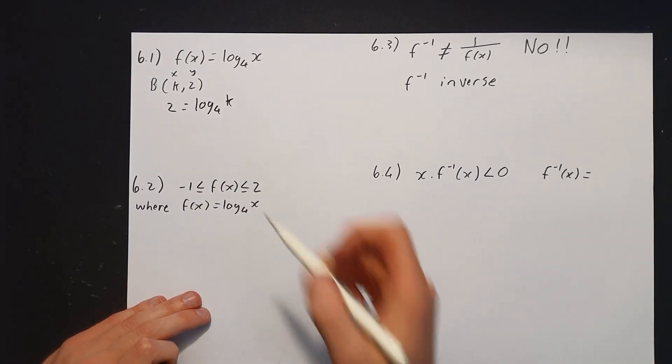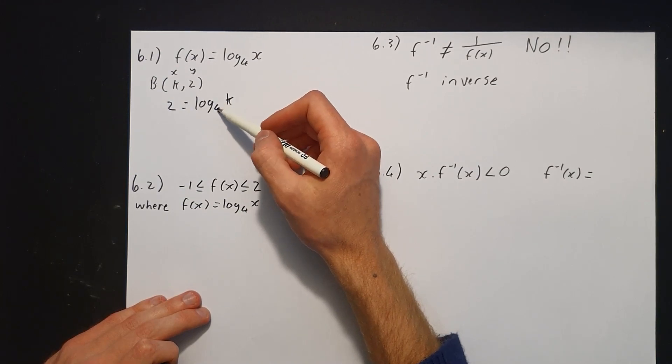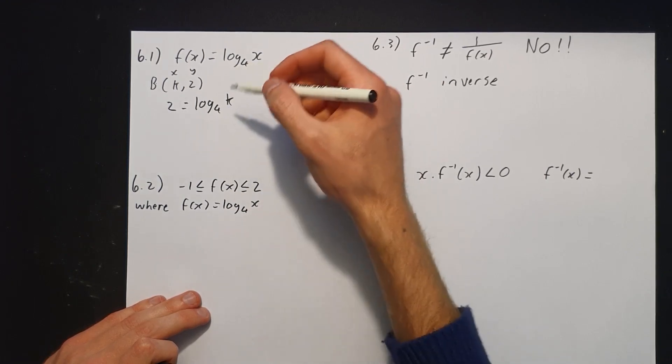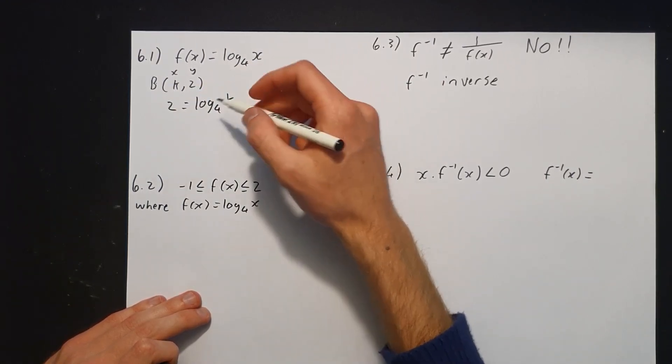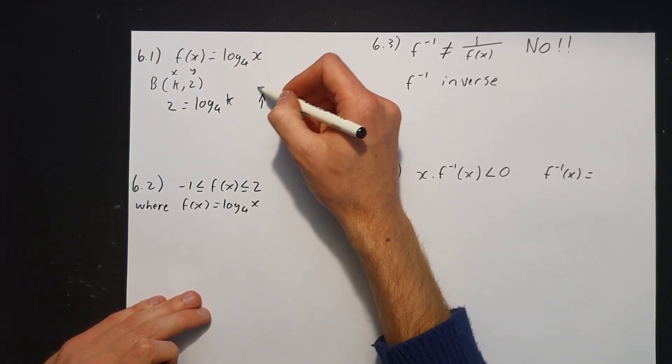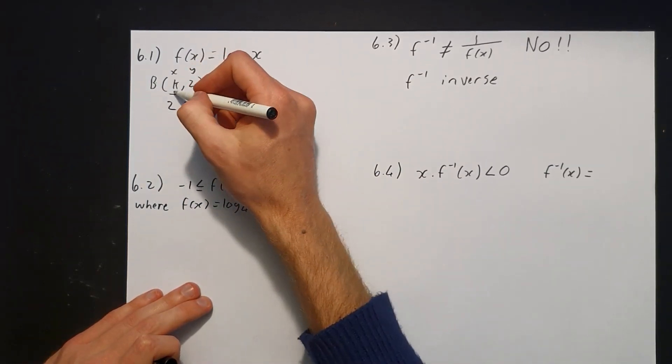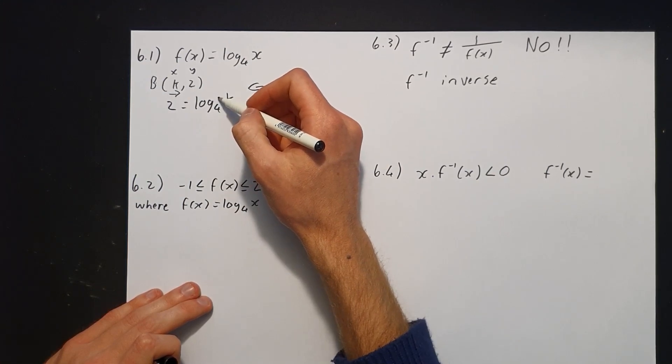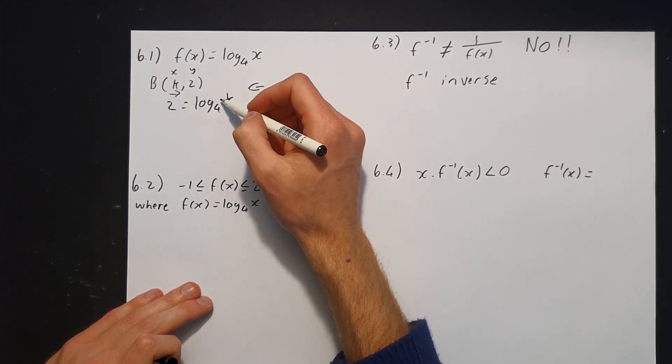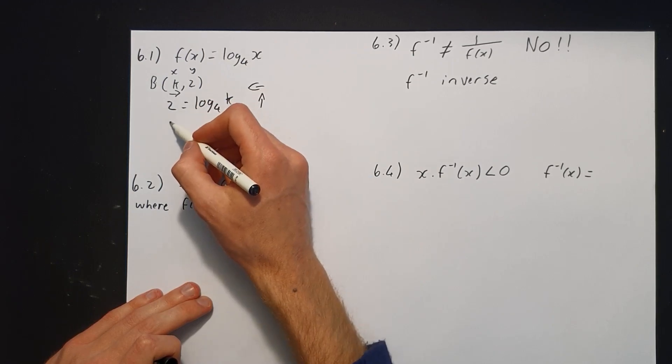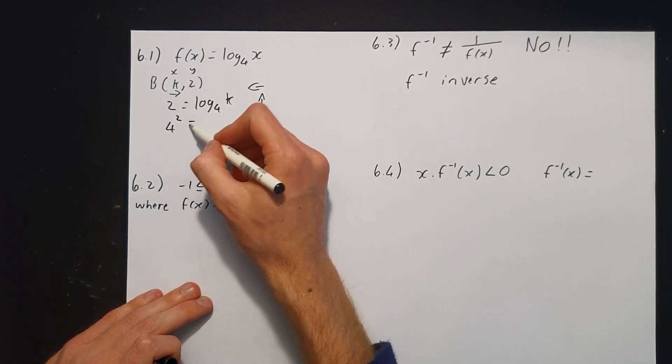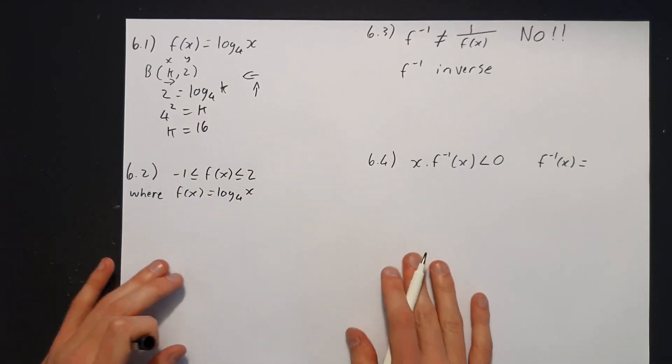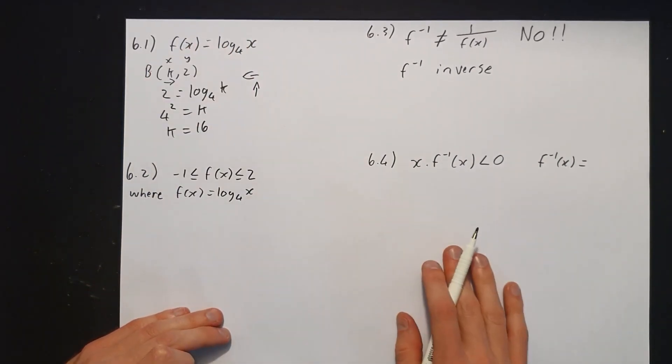Now we've got to solve for k. The rule with log: if we want to get rid of the log to get k on its own, we reverse the log process. So we're going to pop and swap. What do I mean by that? The 4 is going to come up, and the 2 is going to become its exponent, and k will stand on its own. So we'll have 4² = k. Therefore k = 16. That's the pop and swap method.